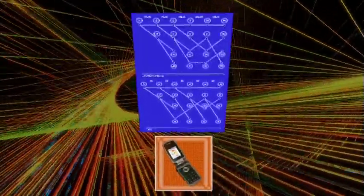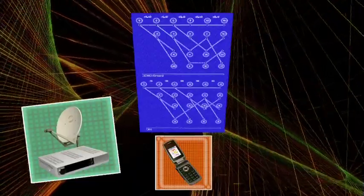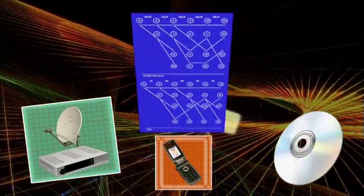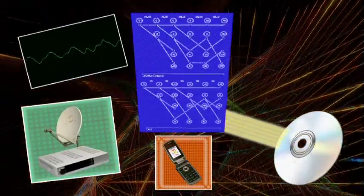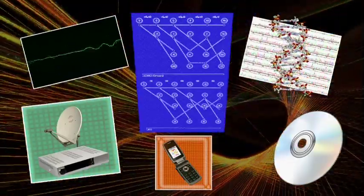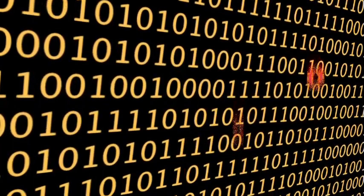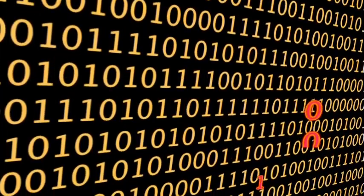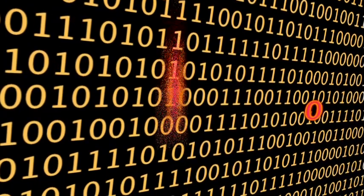Today, the Viterbi algorithm is used in most digital cellular phones and satellite receivers, as well as in such diverse fields as magnetic recording, voice recognition, and DNA sequence analysis. "The original purpose was improving the performance, the accuracy of digital communication, of transmitting the zeros and ones. The signal gets distorted, so to pull the zeros and ones out, we have to have some aids. So that's what the algorithm was designed to do."